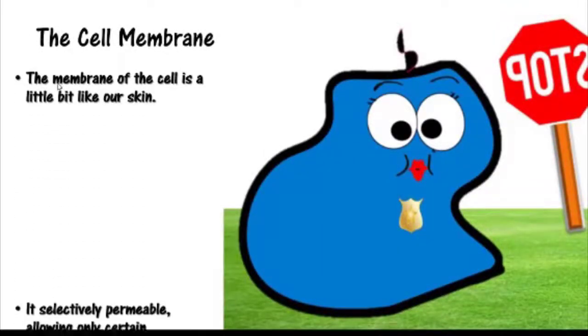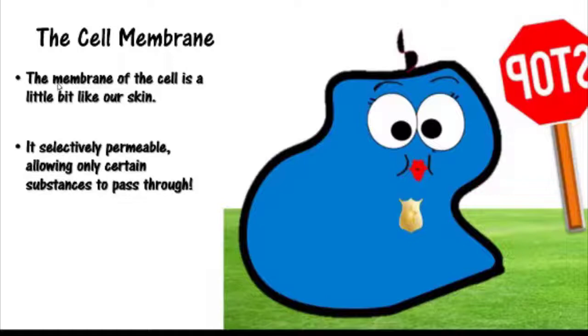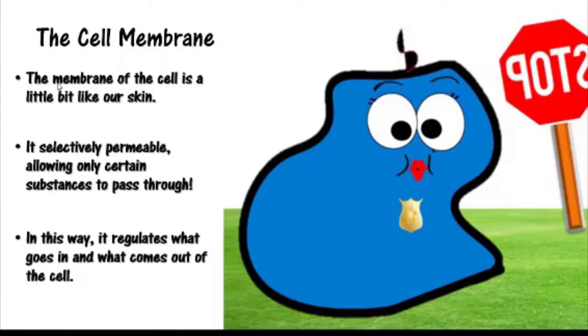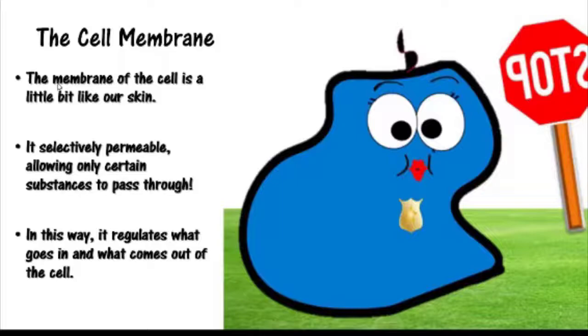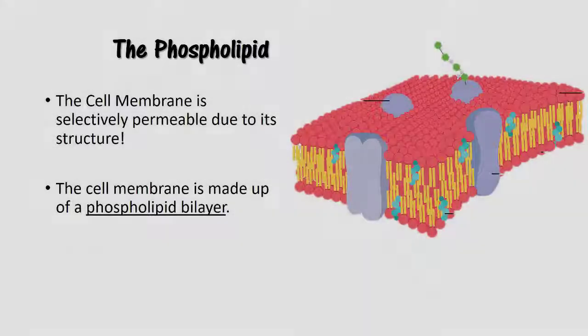The cell membrane has a very important job to do. It is selectively permeable, allowing only for certain substances to pass through. In this way, it regulates what goes in and what comes out of the cell. In other words, it regulates transport.